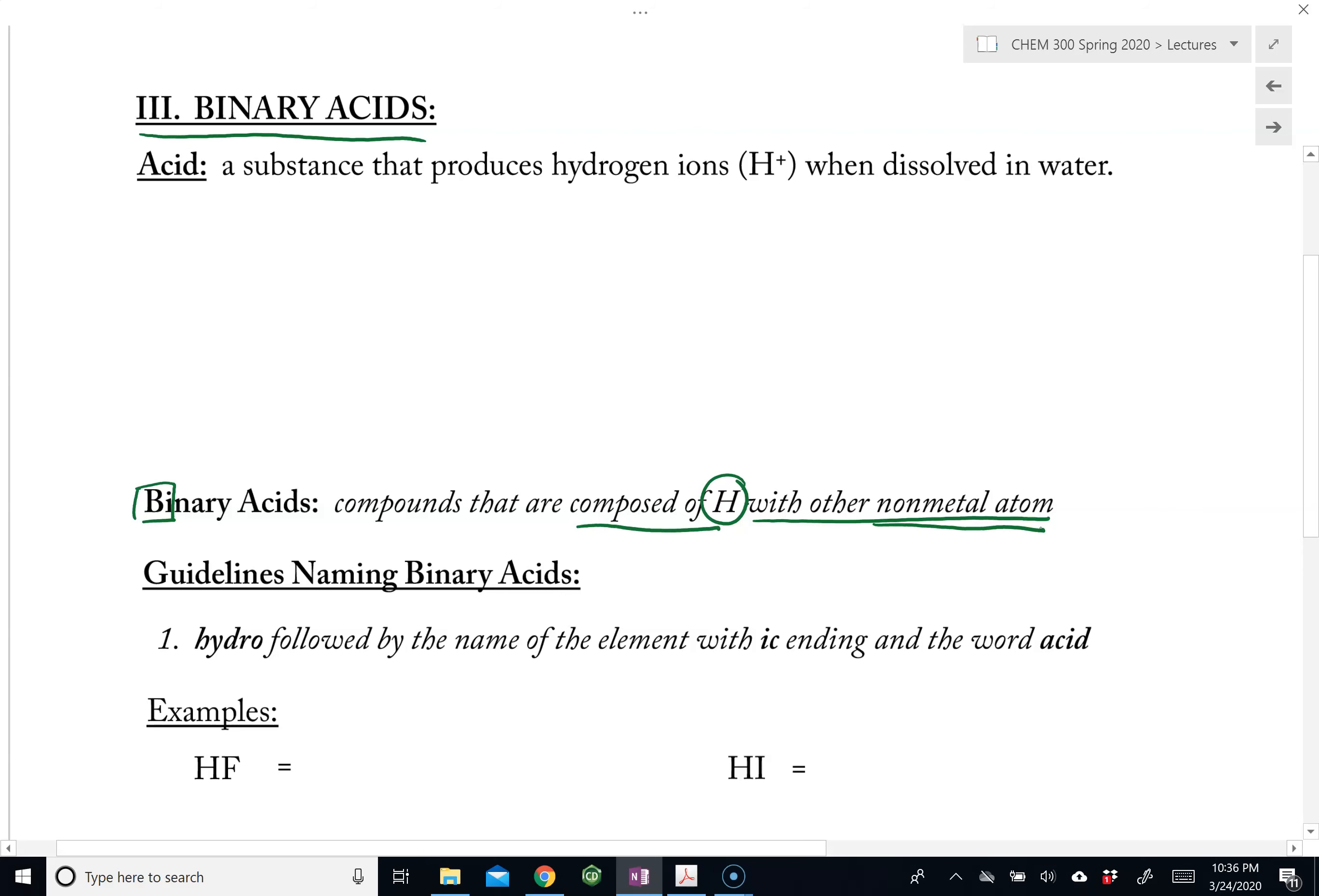However, in order for it to be a binary acid, it has to meet another requirement: the substance has to behave as an acid. What is an acid? An acid is a substance that produces hydrogen ions (H+) when dissolved in water. This is a very special chemical property of binary acids. Therefore, we want to name them with the word acid.